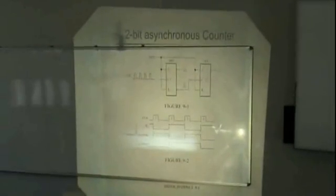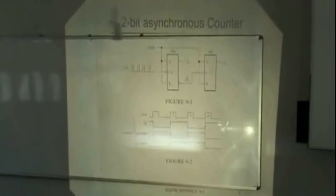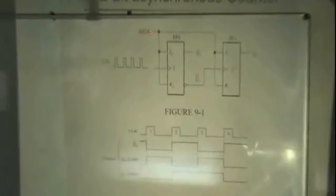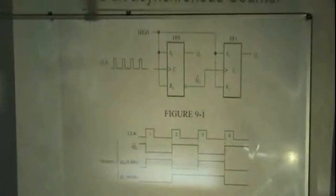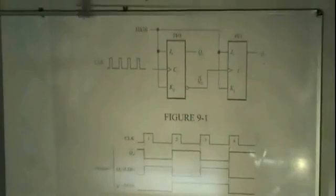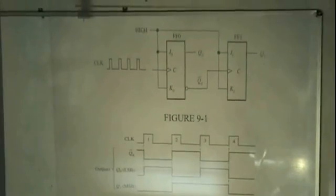And there's our first 2-bit asynchronous counter. The way we've connected it is the J and the K inputs are both connected to a 1. So it's permanently in which condition? Yes, it's in the toggle condition all the time, so it's continuously going to toggle as you clock it.